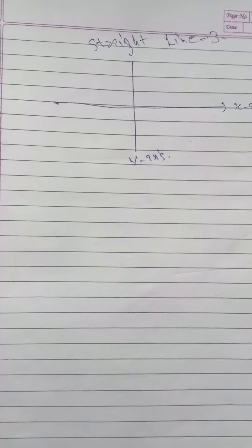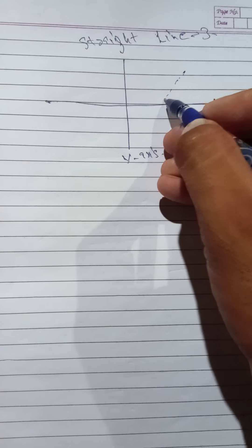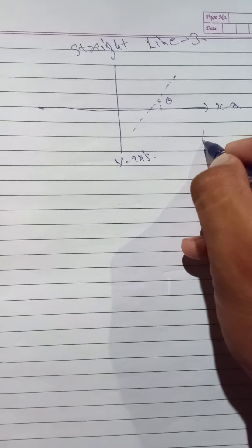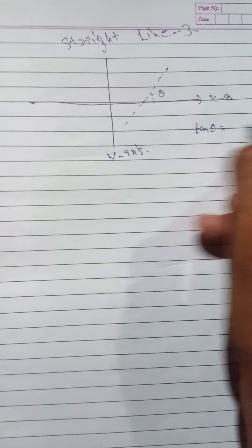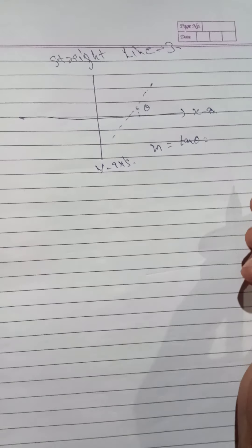Any line which makes an angle theta, let us assume this line and this will be the angle theta, then tan theta will be the slope and it is denoted by m.